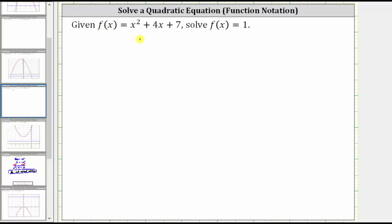So again, we have the function f of x equals x squared plus four x plus seven. Because we are trying to solve f of x equals one, we now substitute one for f of x, which gives us the equation one equals x squared plus four x plus seven.